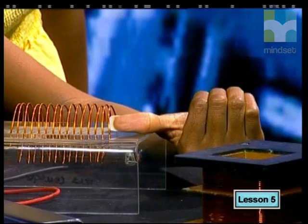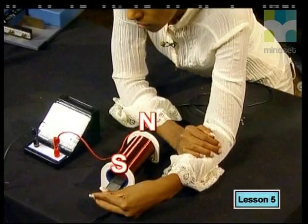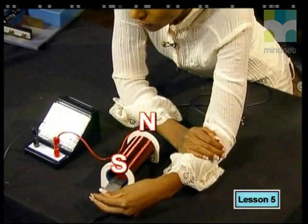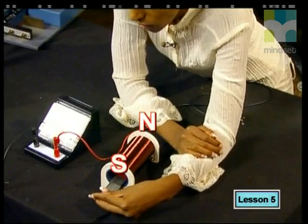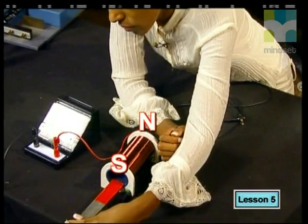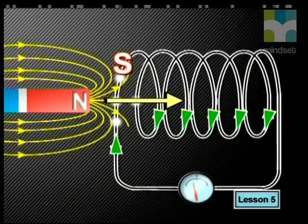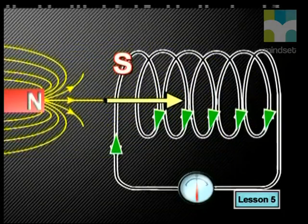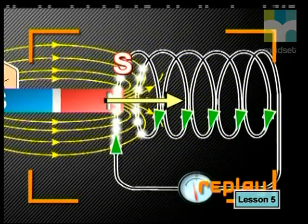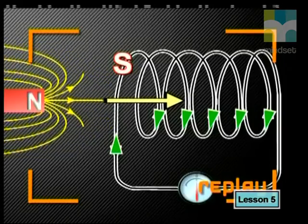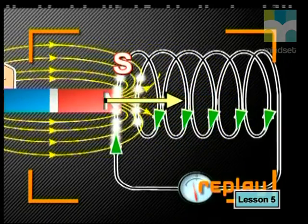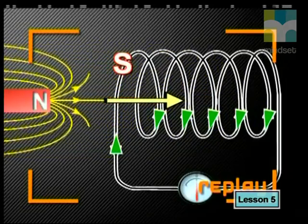Using the right-hand solenoid rule, you can see that my thumb points to the end labeled B where a north pole forms, so this end must be a south pole. The south pole of the solenoid attracts the north pole of the moving magnet and so tries to stop the magnet leaving the coil. Again, the induced magnetic field set up in the coil works to reduce or oppose the inducing action of the magnet by exerting a force on the magnet that is opposite in direction to the magnet's motion.